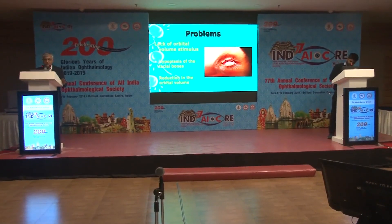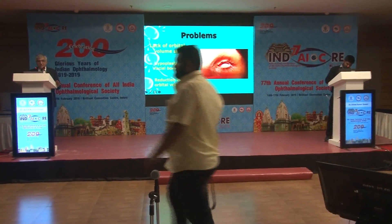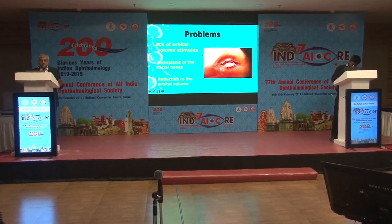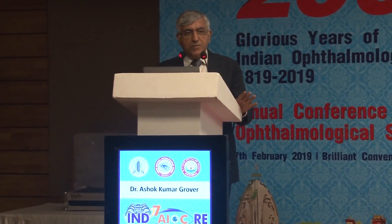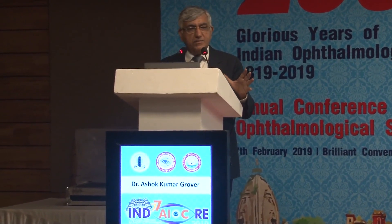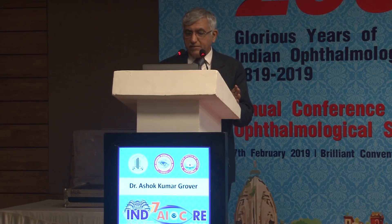Congenital anophthalmos presents a special difficulty for several reasons because there is a lack of orbital volume stimulus. As a result, there is hypoplasia of the facial bones and you have a smaller orbit, which in itself presents a limitation which you can't get beyond. There is an overall reduction in all the structures available to you: the lateral canthus to medial canthus distance, the palpebral fissure height horizontally and vertically, and the amount of tissue available.